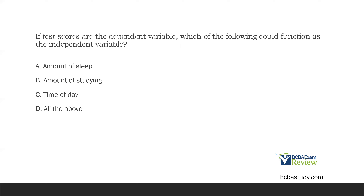Question three. If test scores are the dependent variable, which of the following could function as the independent variable? The dependent variable is the one we're observing, and the independent variable causes the dependent variable to change. When we manipulate the independent variable, we're hoping to affect the dependent variable so we can demonstrate functional control — that's the whole idea behind single-subject experiments. So if test scores are the dependent variable, what can we manipulate to alter those test scores? That's what we're asking.